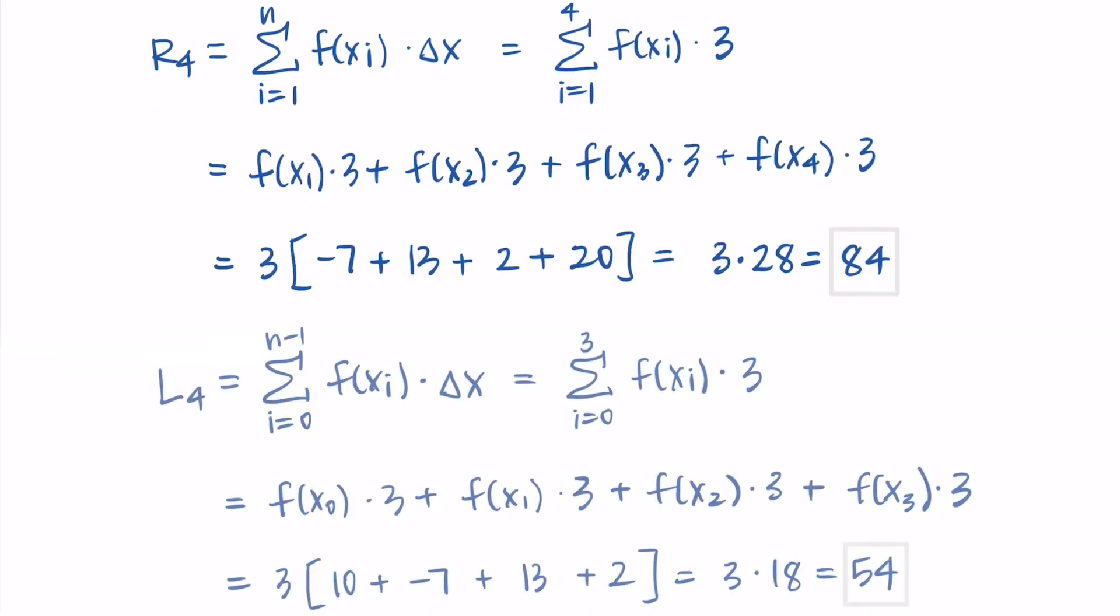Then, all together, we have our two answers. We have the right Riemann sum is 84, and the left Riemann sum is 54. All right, so that's just an example of how to find the right and left Riemann sums when you're given discrete data points. For us, that meant we were given a table of data to use to find our Riemann sums. Thanks so much for watching, and I will talk to you in the next one.